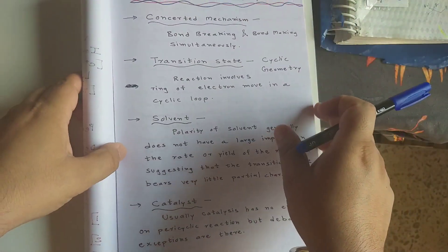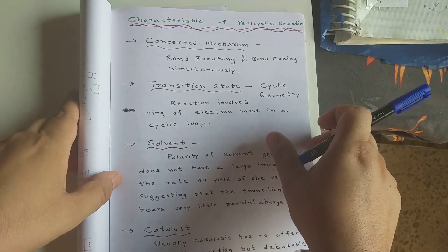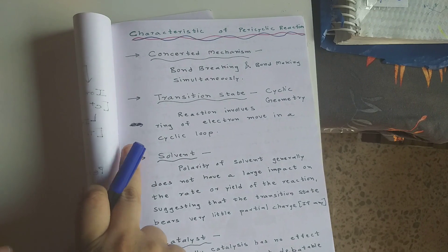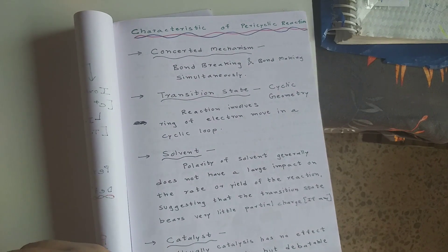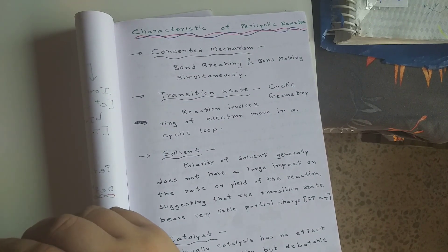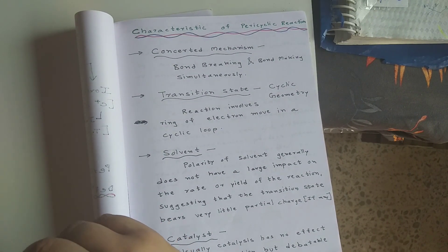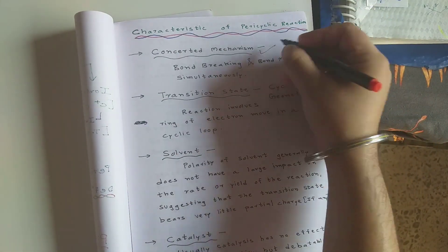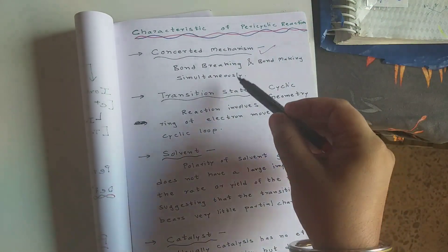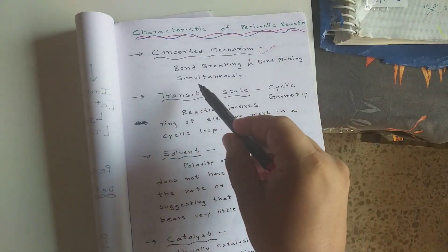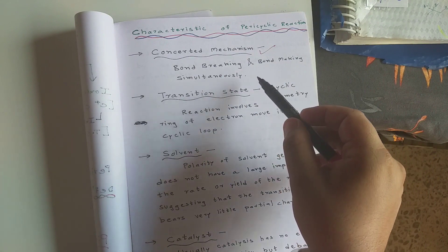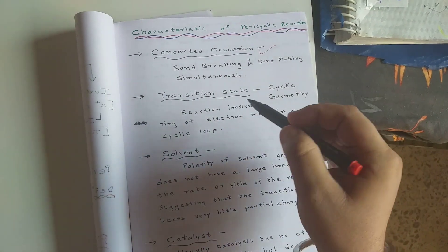Now we will discuss the characteristics of pericyclic reactions. The first characteristic is that it is a concerted mechanism — meaning bond making and breaking take place simultaneously, both at the same time.